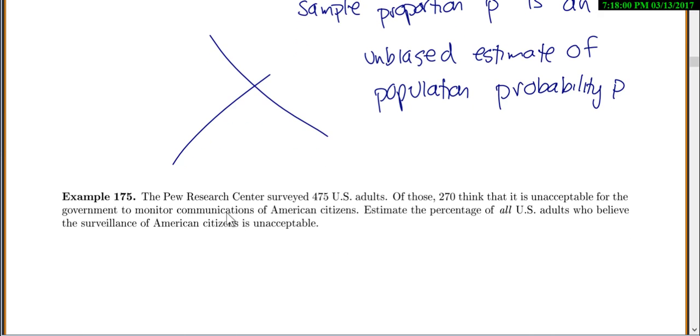Let's do this example. The Pew Research Center surveyed 475 U.S. adults. Of those, 270 think that it's unacceptable for the government to monitor communication. Let's estimate the percentage of all U.S. adults who believe the surveillance of American citizens is unacceptable. So I would look at this and say, in our sample, we have 270 out of 475, which is 0.57.